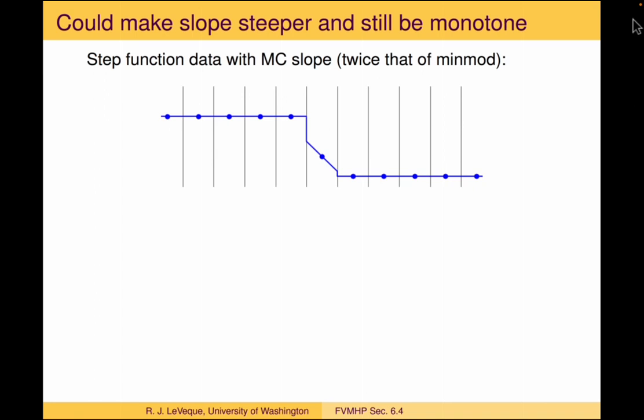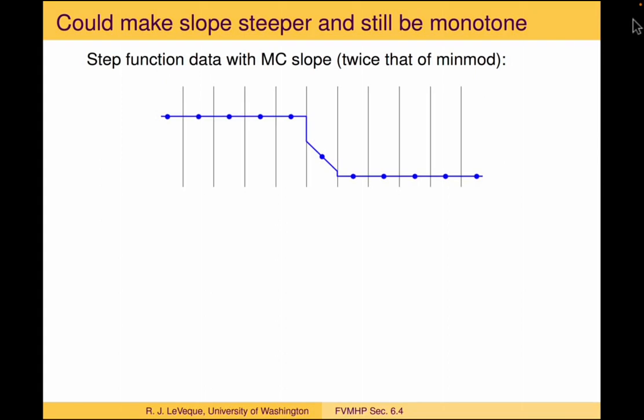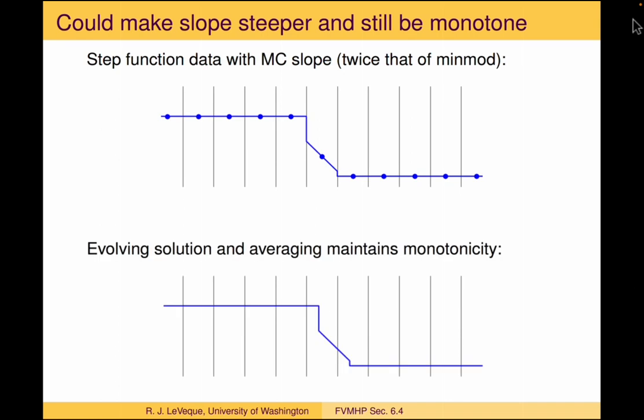So the idea of this Monotonized Centered (MC) limiter is that we look at double the min-mod as being sort of an upper limit, but we also look at the centered slope — the slope obtained by looking at the two neighbors, one to the left and one to the right. Where things are smooth, that's probably a reasonable value to use. But we apply a limiter of twice the min-mod to make sure that we don't get oscillations introduced around the discontinuity. For this example data, we would have a method that seems to preserve monotonicity.